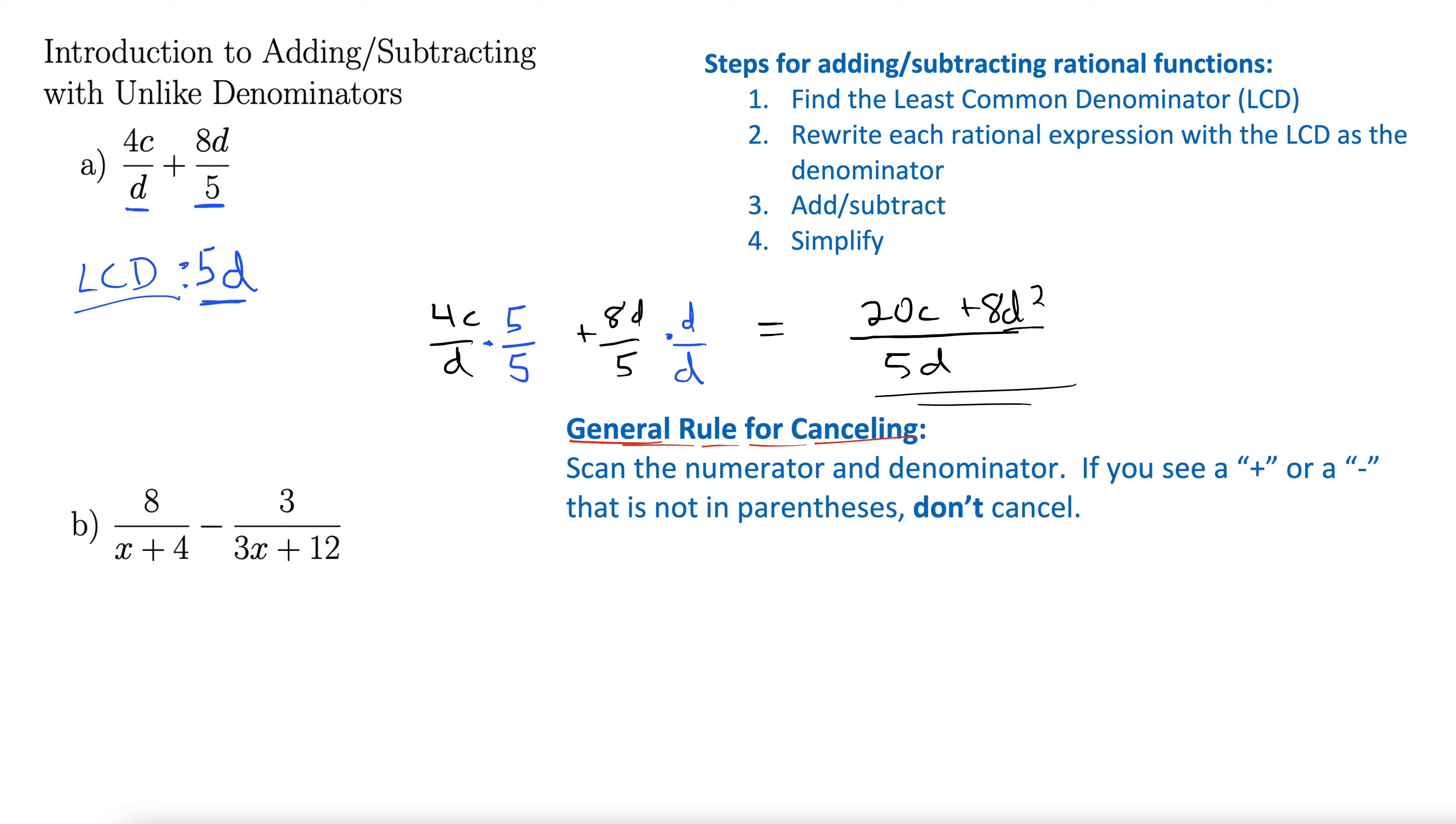Let's try the next one. We have 8 over x plus 4 minus 3 over 3x plus 12. First thing I'm going to do is factor where I can. So we have 8 over x plus 4. Nothing happens there. Minus 3 over, look, I can factor a 3 out down here. 3 over x plus 4. There we go.